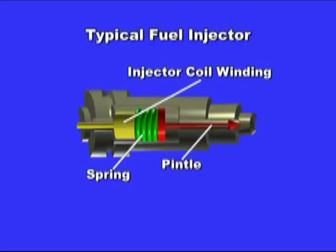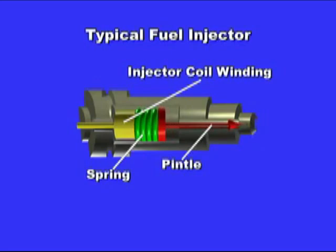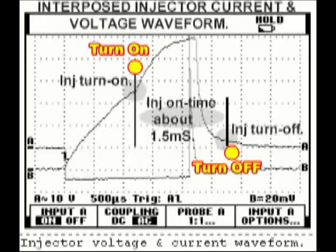The coil creates the magnetic field. The spring returns the pintle to its closed position. These two components, although simple, are very important. If the spring is weak, the injector waveform closed hump will show up late. If the pintle channel is clogged, the open waveform current hump will also show up on the waveform.